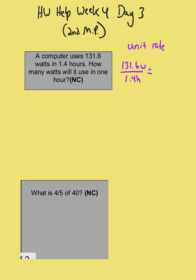If a computer uses 131.6 watts in 1.4 hours, it says how many watts will it use in one hour? That's where the unit rate comes in. To change any number to one, you divide by itself, divide by 1.4. So we just have to do 131.6 divided by 1.4. But again, this is a no calculator problem. The point is this helped me see that this is the math problem I need to set up.